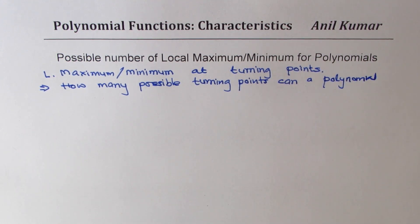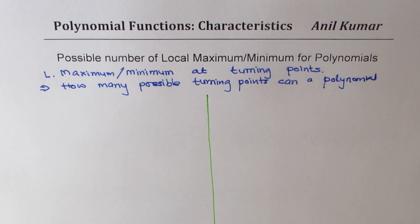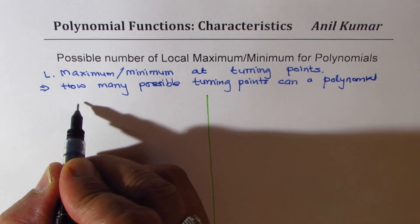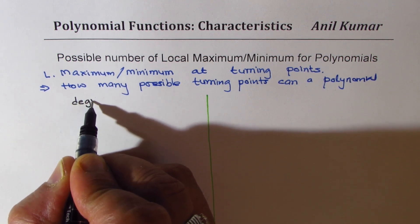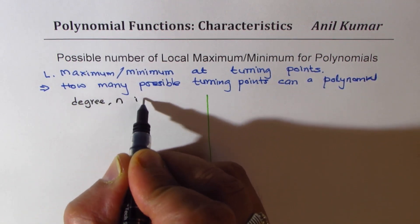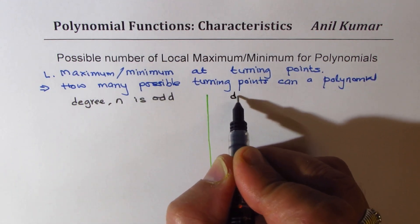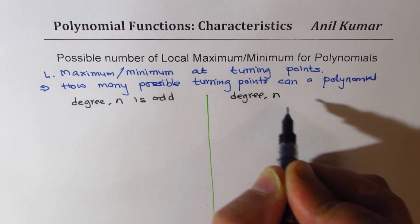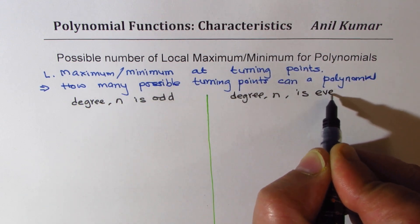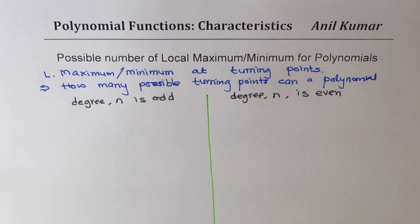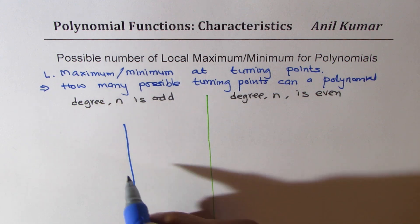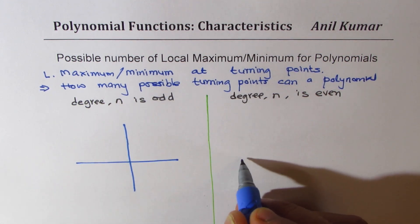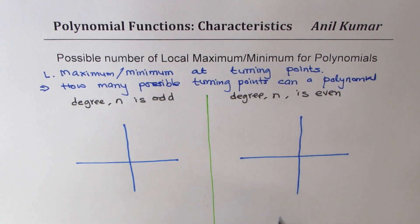Now to answer this question, I will divide the set of polynomials into two categories. One having odd degree, where degree n is odd. And the other one where the degree of polynomial n is even. Mainly because these polynomials will have different characteristics. Let me make a sketch to explain. So I will try to sketch even degree and odd degree polynomials and understand the concept.